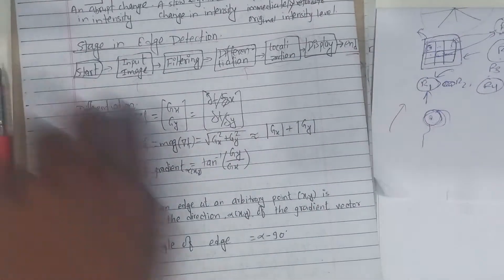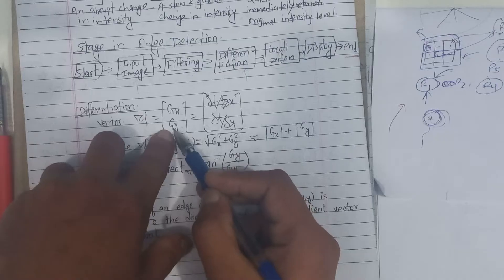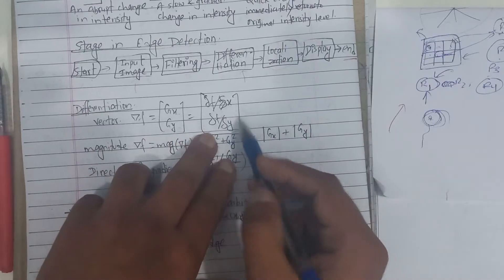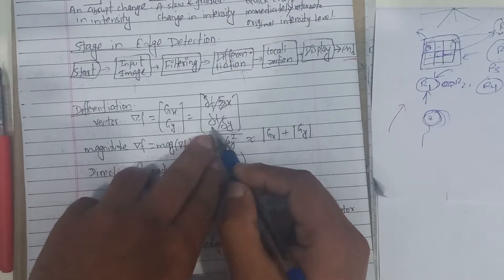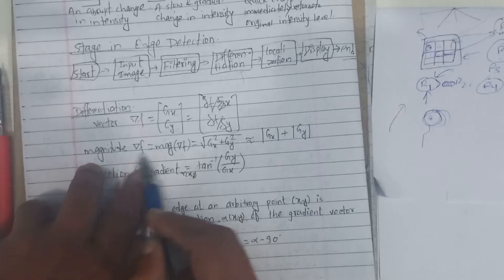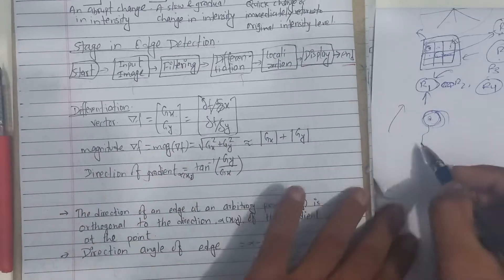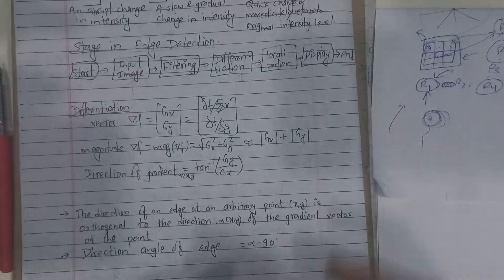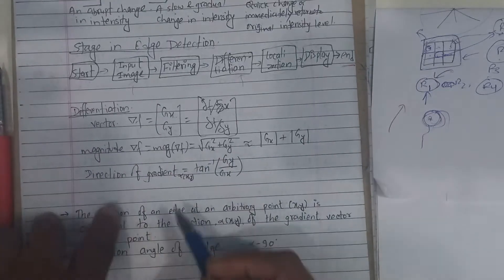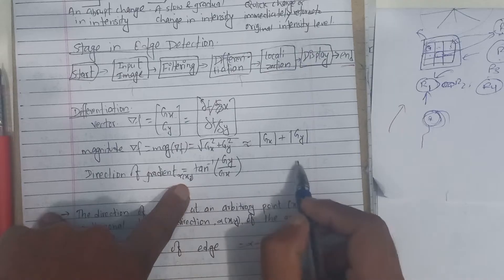The partial derivative with respect to x is del x, giving us Gx. The partial derivative with respect to y gives us Gy. The magnitude is the square root of Gx squared plus Gy squared. For discrete values, we use the simple approximation: magnitude of Gx plus magnitude of Gy. The direction of the gradient vector is alpha(x, y) = tan inverse of Gy over Gx.